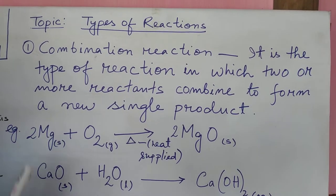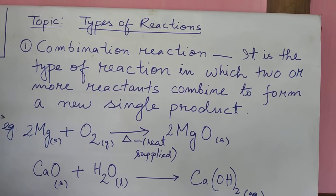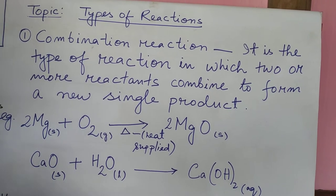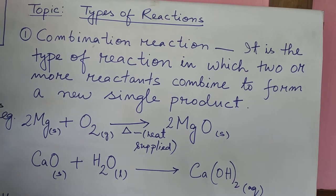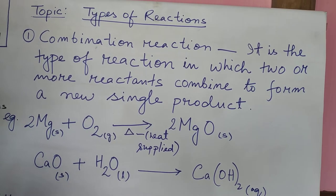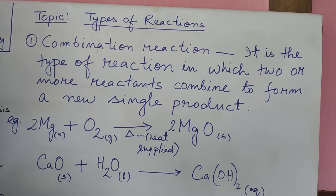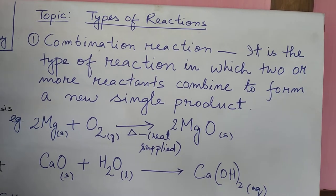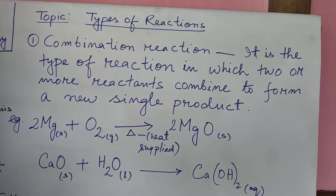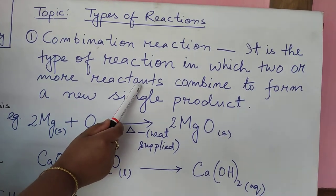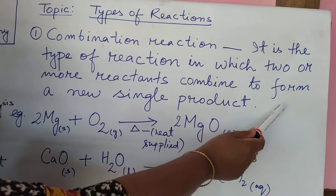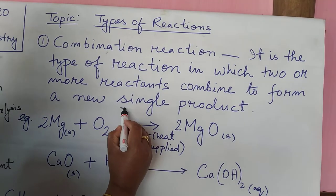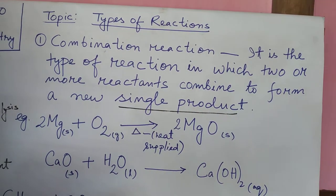Very simple, as the name also indicates, combination. That means you will combine some substances. So we will not call substances, we will use the term reactants. So first of all, let me read out the definition. It is the type of reaction in which two or more reactants combine to form a new single product. You have to be careful here, a new single product.